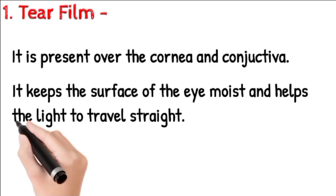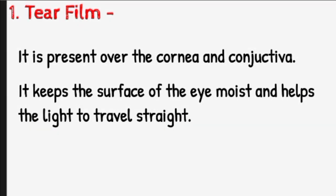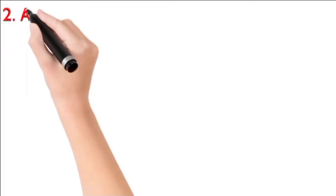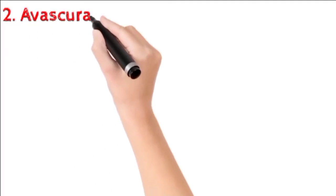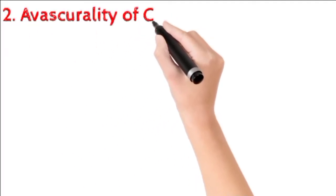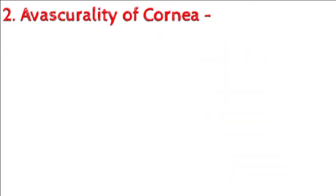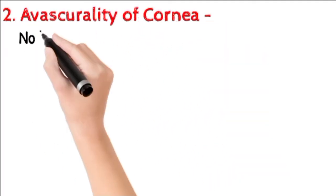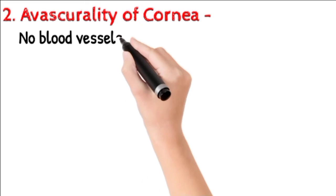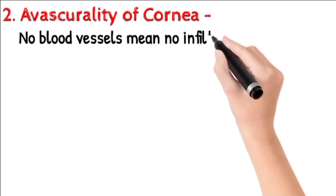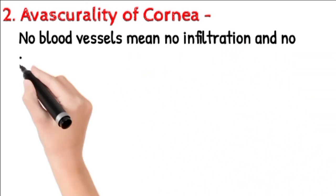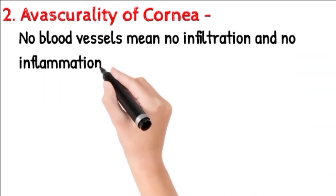Next is the avascularity of the cornea. No blood vessels means no infiltration and no inflammation, so it helps in maintaining transparency.